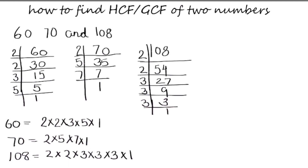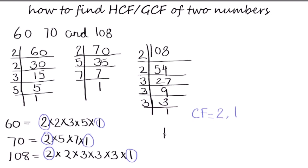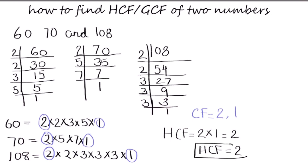Now we are going to find the common factors. I will circle the common factors. 2 is common in all 3 numbers, so I circle 2. There is no 3 common across all three numbers. 1 is a common factor of all numbers, so we circle 1. The common factors are 2 and 1. To find the highest common factor, we multiply all the common factors: 2 × 1 = 2. So the highest common factor of 60, 70, and 108 is 2. This is how you can find the highest common factor or greatest common factor of 2 or 3 numbers.